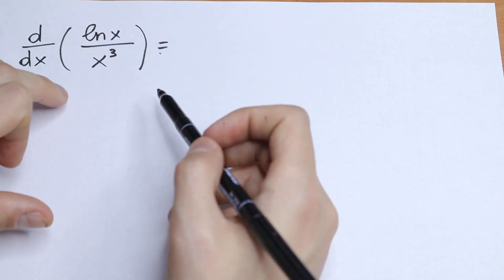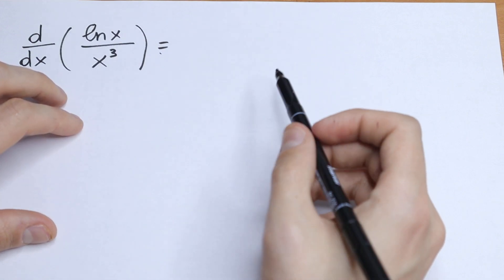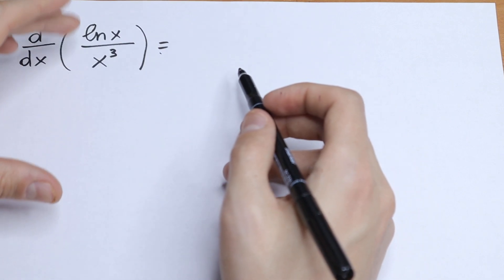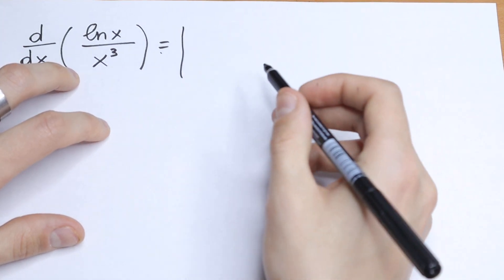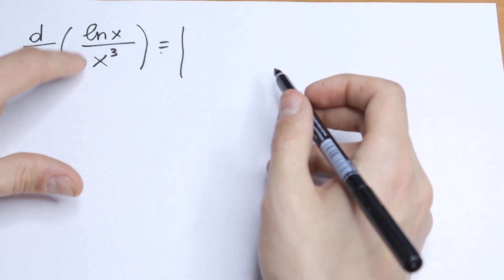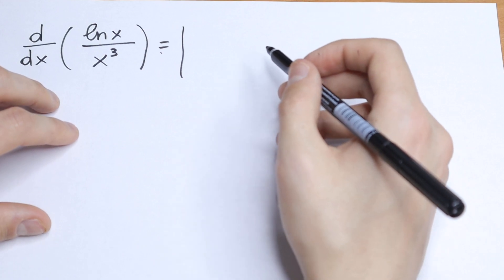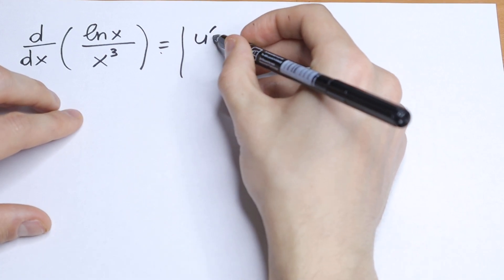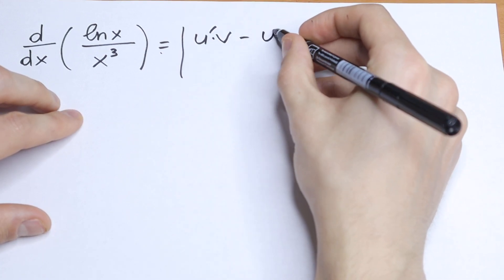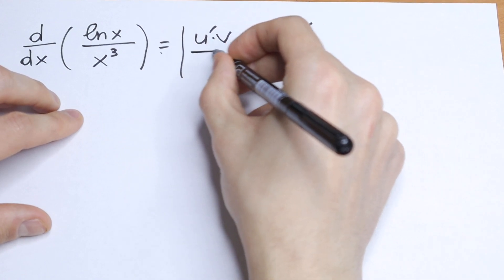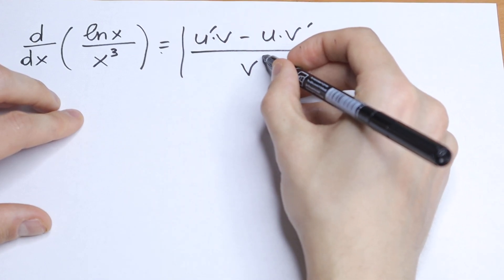On the first look this question seems really hard because we have a fraction, but we all know the formula. If we have a fraction, we need to find our u and v and put them in our formula. The formula is: u' times v, minus u times v', and we divide it by v squared.